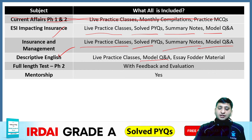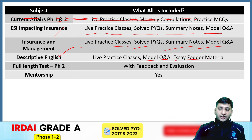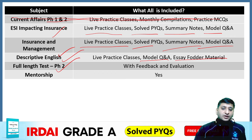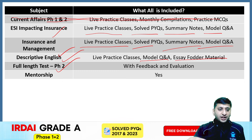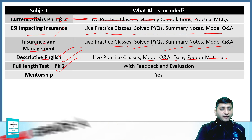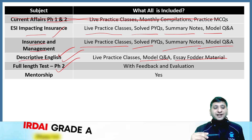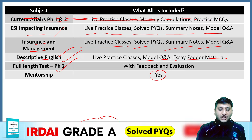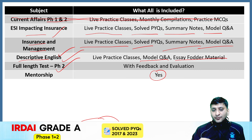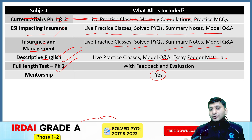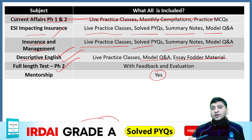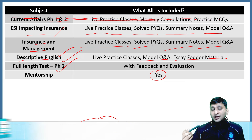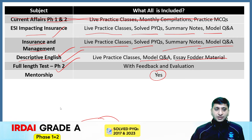For Descriptive English, model question and answer means some sample essays, precis, and essay-type order material. You will also get full-length tests for phase 2 — 5 tests for ESI Impacting Insurance, 5 for Insurance and Management, and 5 for Descriptive English. Each of these tests would be evaluated and detailed feedback would be given to you. Mentorship is obviously part of this course. You can email your doubts at the provided email ID and our team will reply. You can also fix a call with the faculty if you want to talk one-on-one to resolve doubts regarding strategy. There is also a discussion forum on our platform where you can post your doubts and they would be answered within a certain time limit.